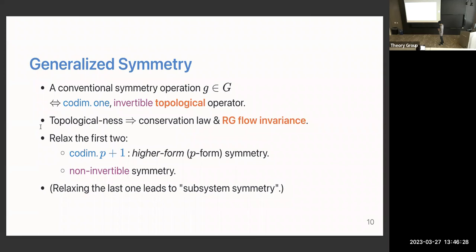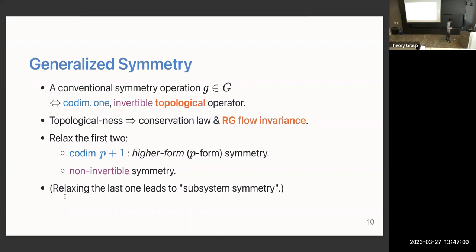If you relax the first condition and consider general p+1-dimensional topological operators, that's called higher-form symmetry, first introduced by Gaiotto, Kapustin, Seiberg and Willett in 2014. If you relax the second condition — invertibility — that's called non-invertible symmetry. You can also relax the third condition in certain contexts, like subsystem symmetry in fracton systems, but I won't talk about that today.